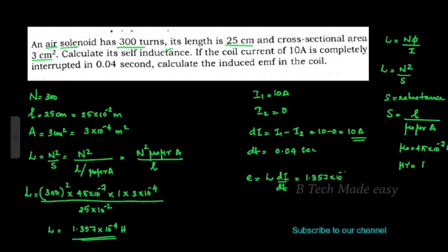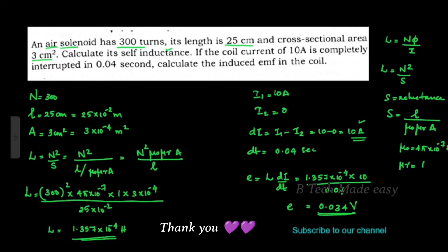The change in current dI equals 10 Ampere and dt equals 0.04 second. Substituting these values, the induced EMF equals L times dI divided by dt, which gives approximately 0.034 V.